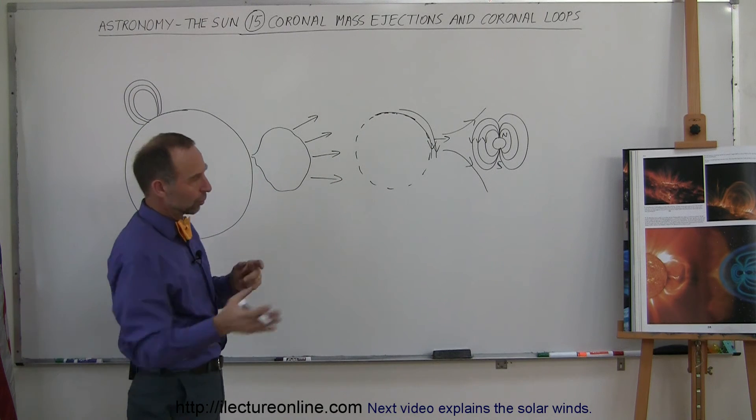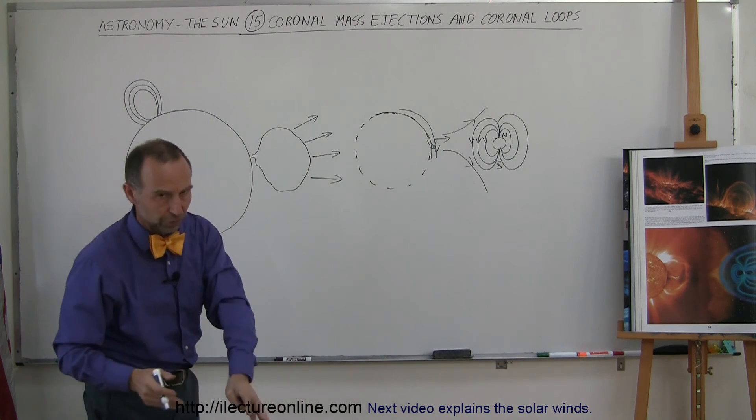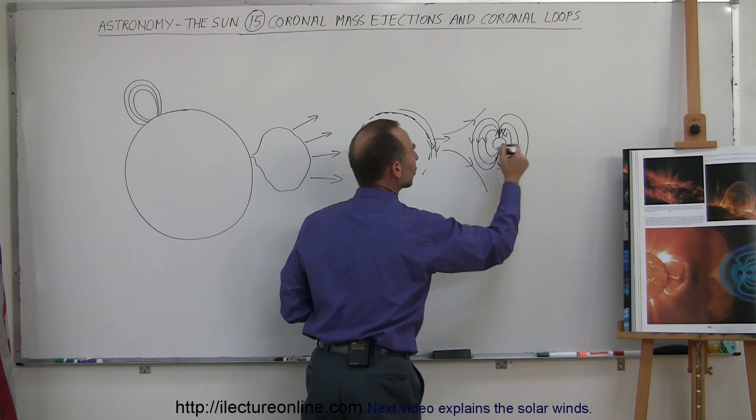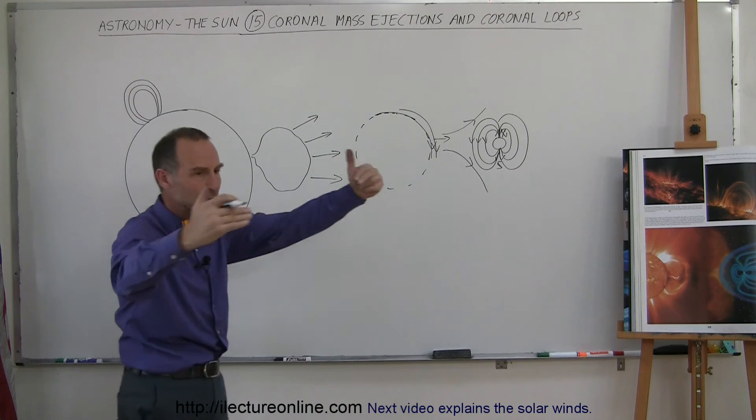The negative charged particles will go one direction, the positive charged particles will go the other direction. When that happens, we usually see amazing aurora borealis near the North and the South Pole from these particles that stream in towards the polar regions of the Earth.